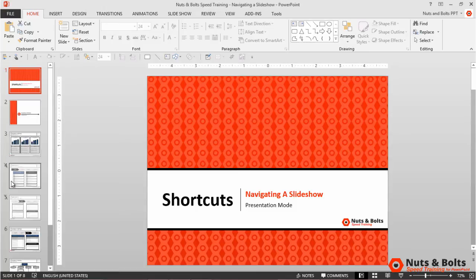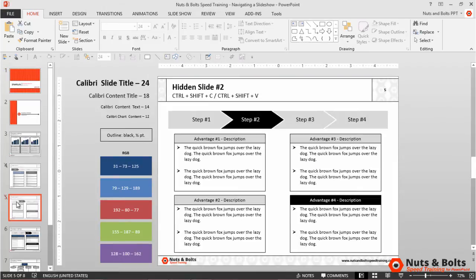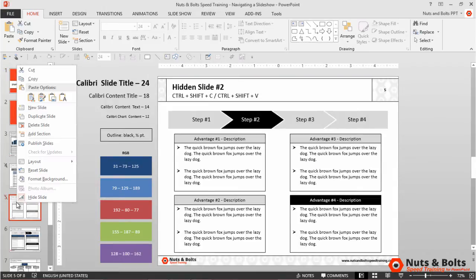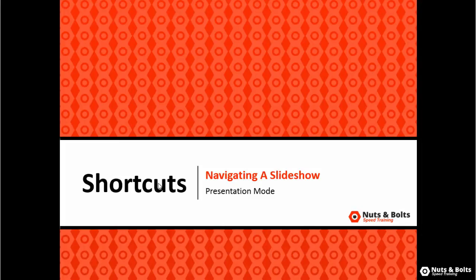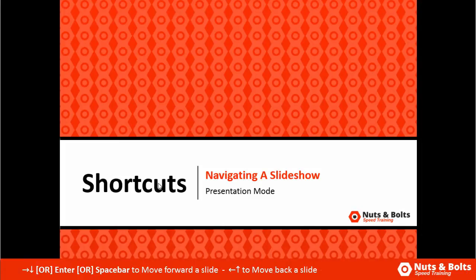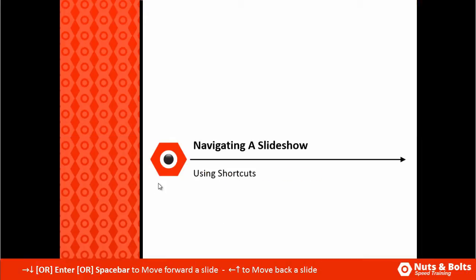You can tell the slides are hidden because the numbers are crossed out. To hide a slide, simply right-click it in the thumbnail view and select Hide Slide — the same way to unhide a slide. I'm going to hit Escape and then hit F5 for presentation mode.